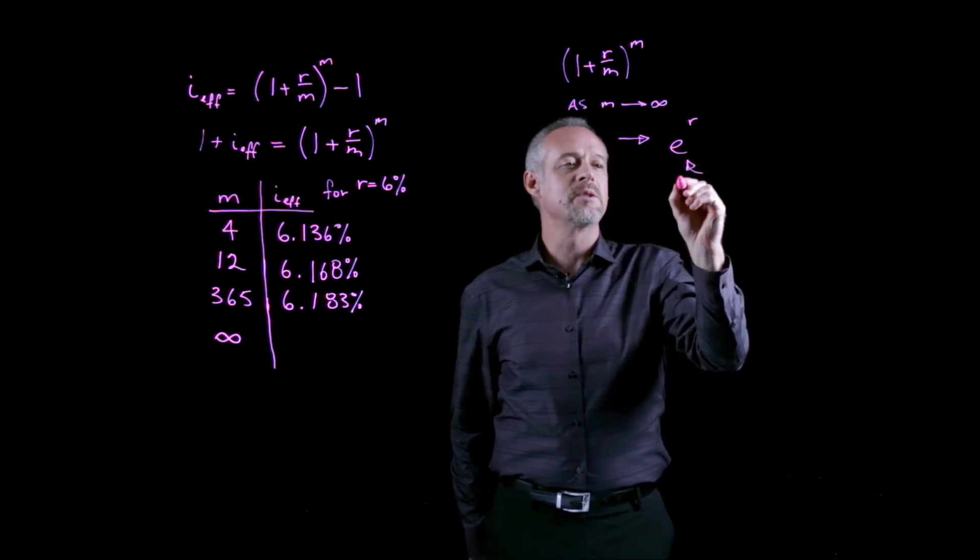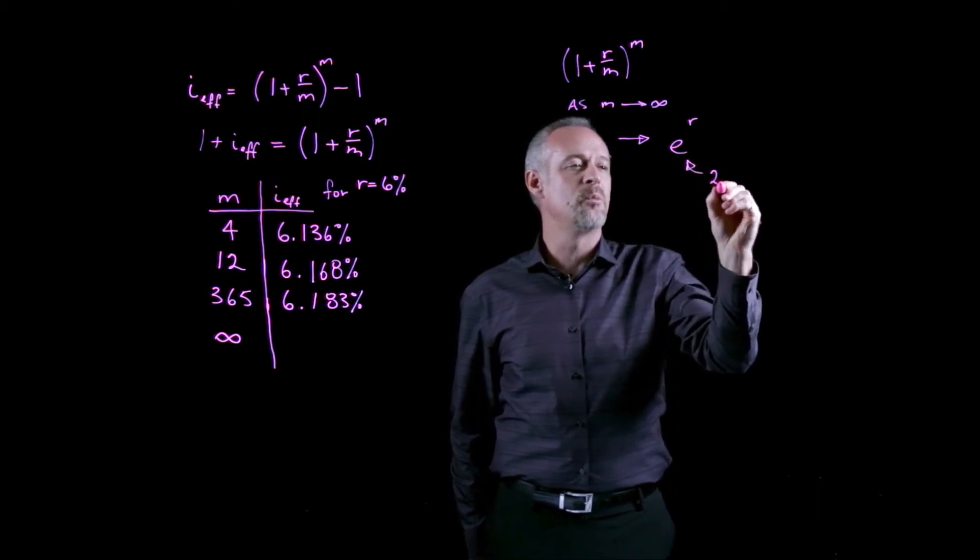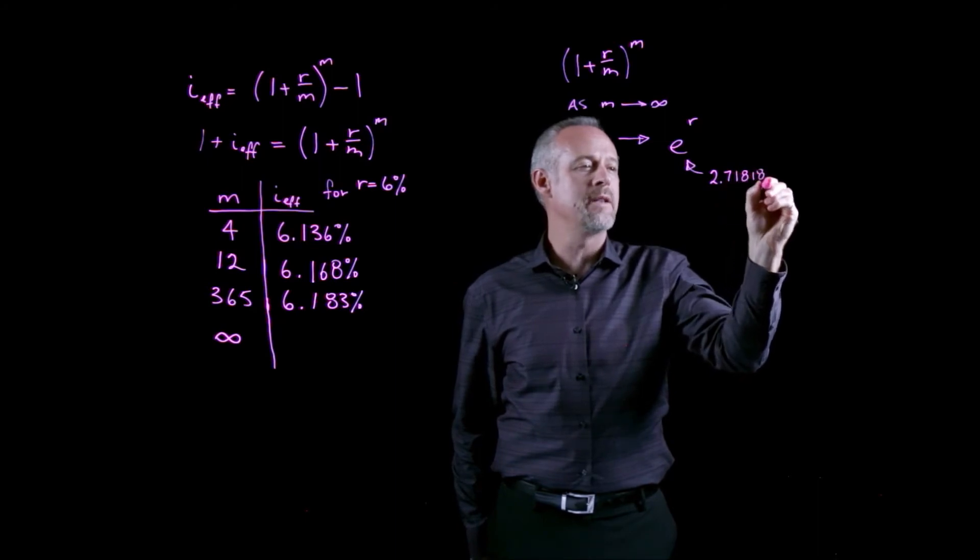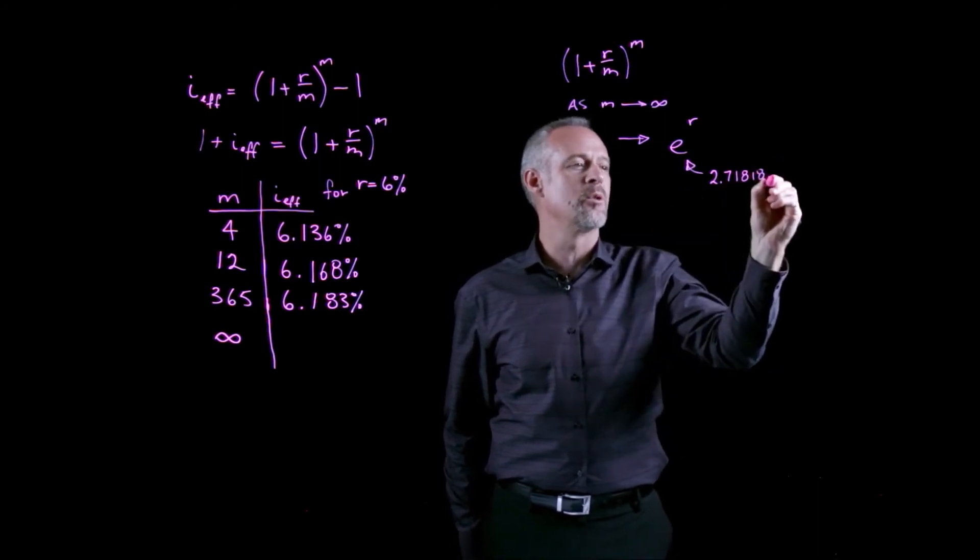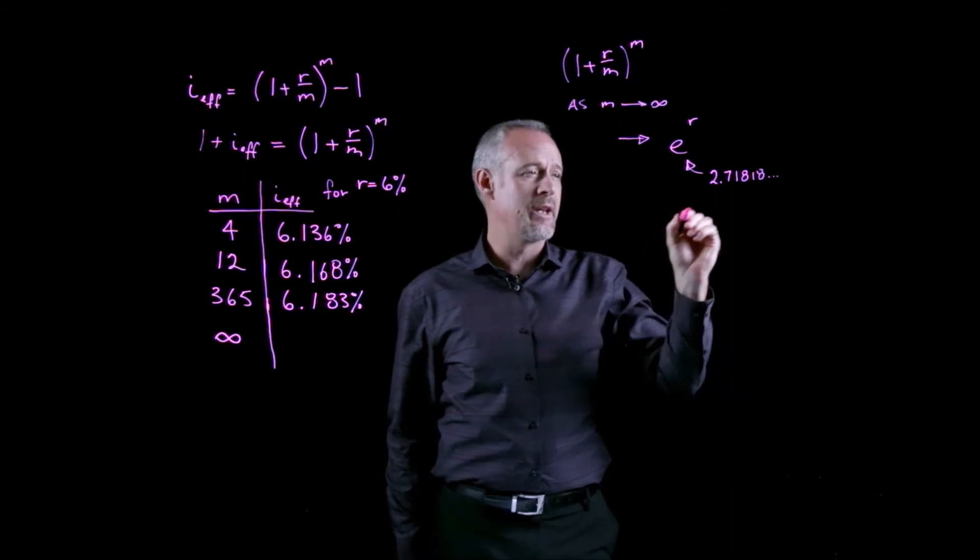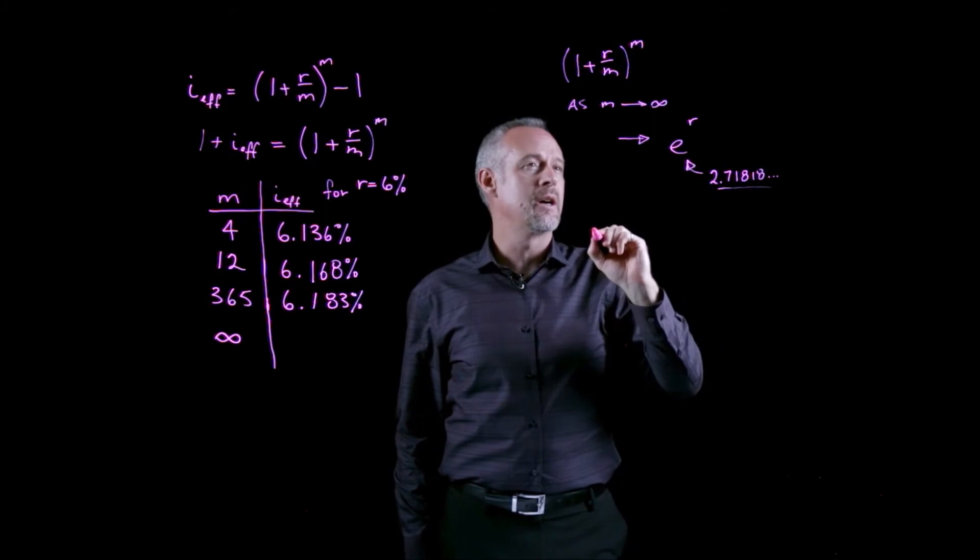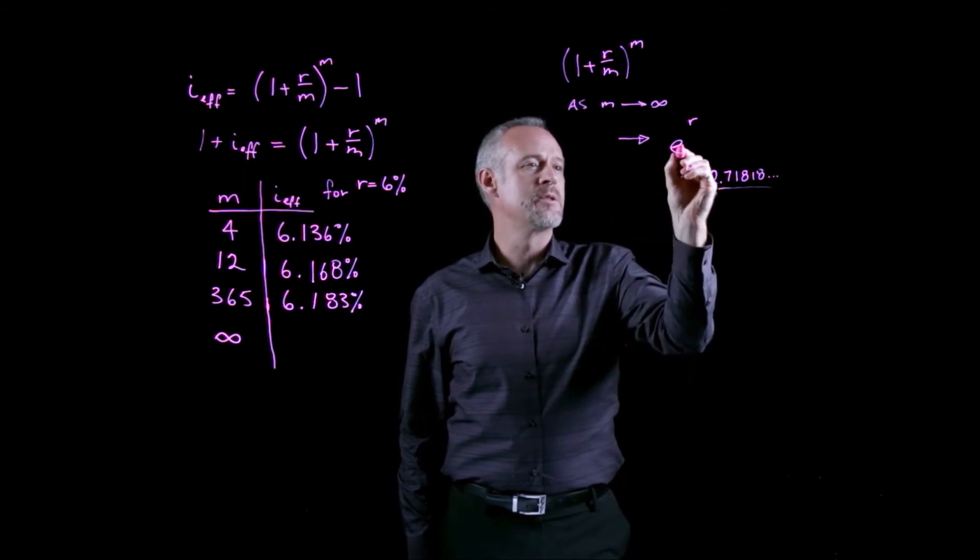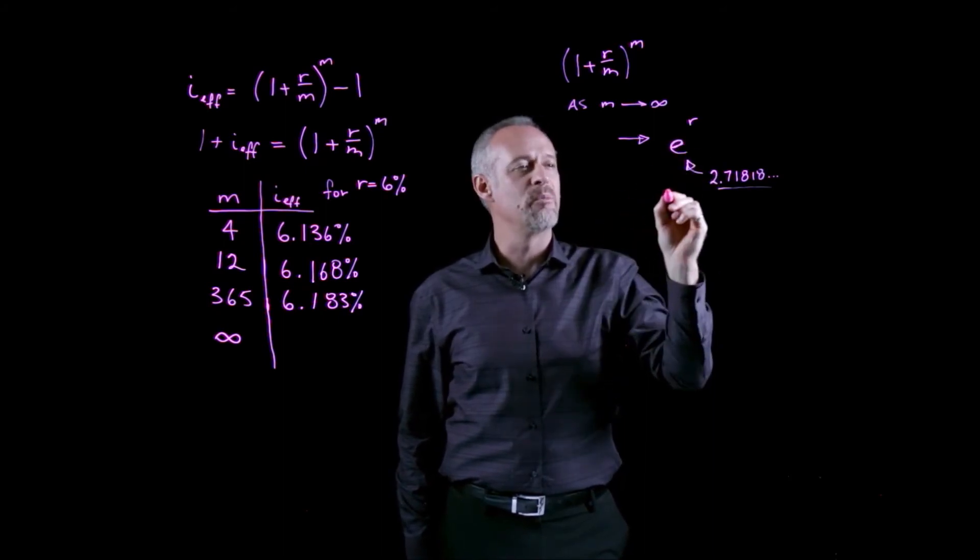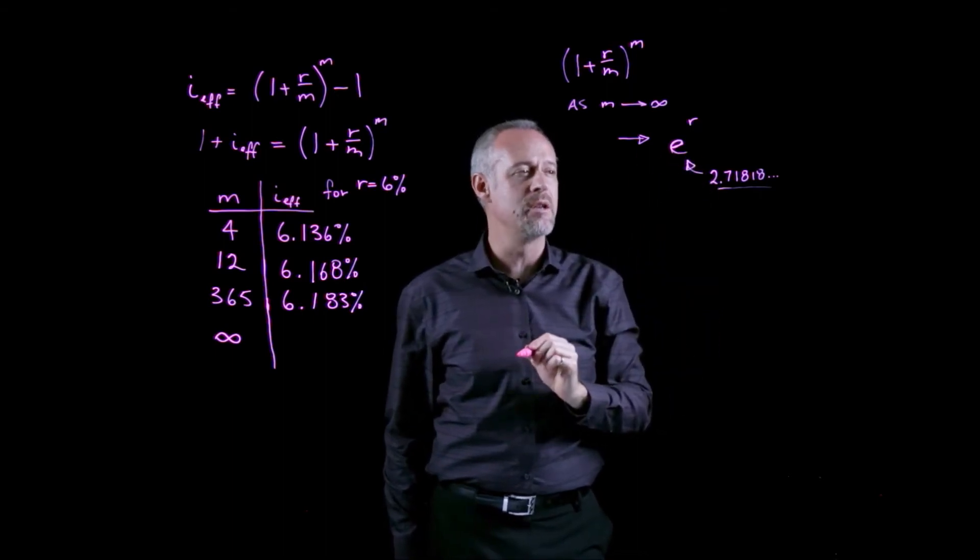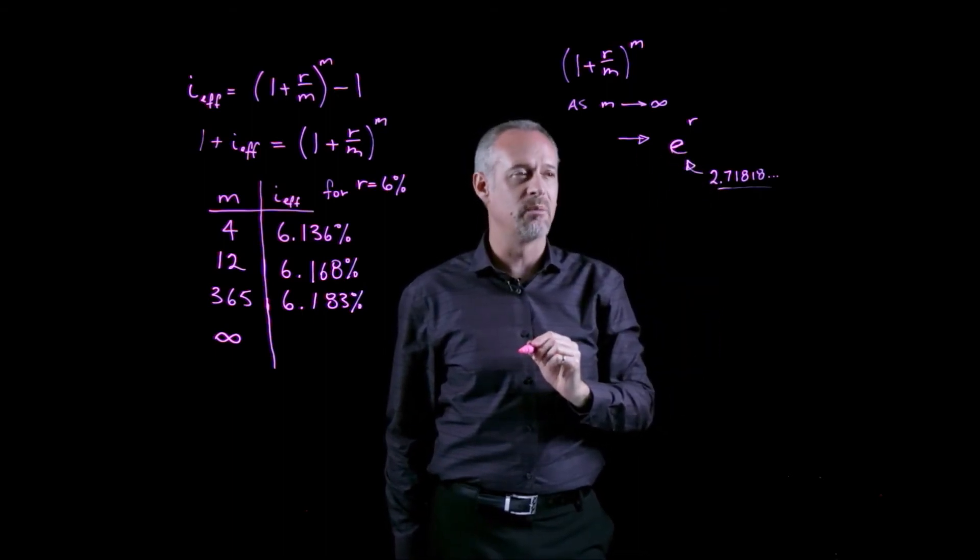Where e is this magical number, it's 2.71828 something something, it goes on. It's one of those transcendental numbers like pi. Quite a discovery. E is commonly referred back to Euler, but the discoverer of the value of E was, in fact, Jacob Bernoulli.